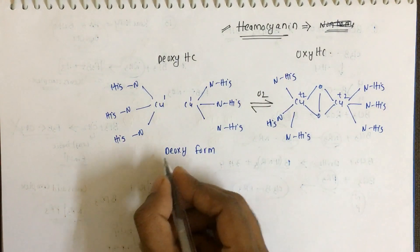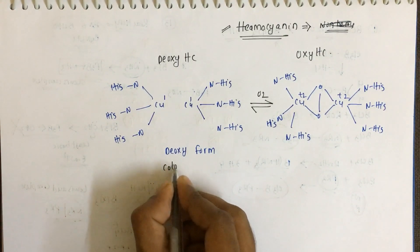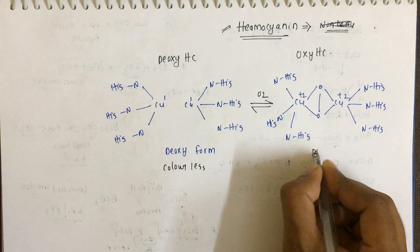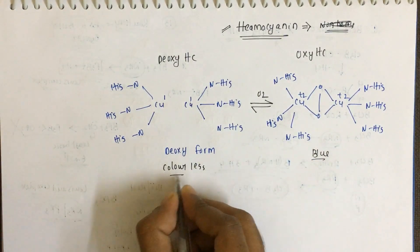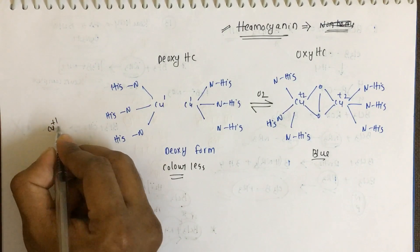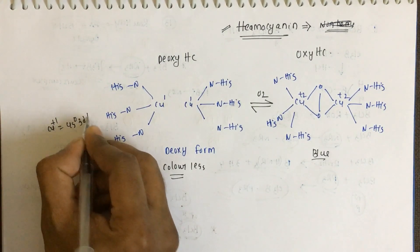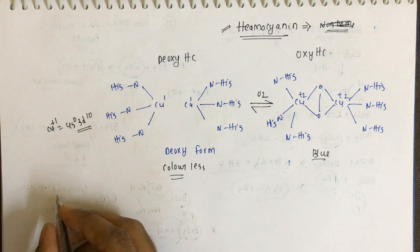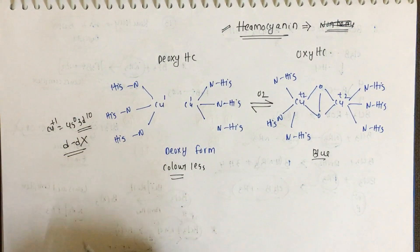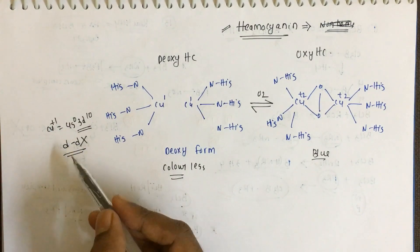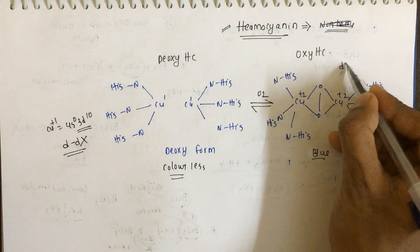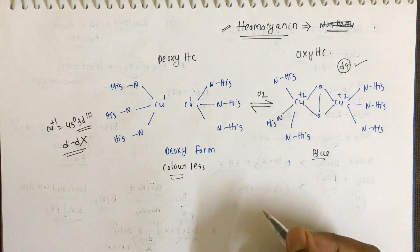The deoxy form is colorless, but the oxy form is blue colored. In the deoxy form, copper is in the plus one oxidation state — that is 4s0 3d10, a d10 configuration — so d-d transition is completely ruled out. In the oxy form, copper is plus two, which is d9, so d-d transition is possible.